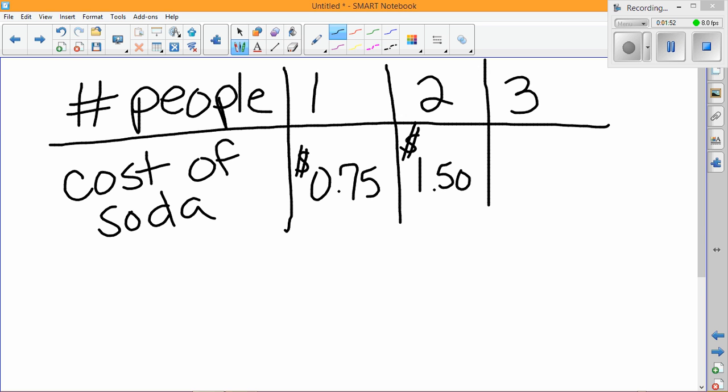If you were to have three people, then you're going to have $2.25 be your cost. And so on and so forth.